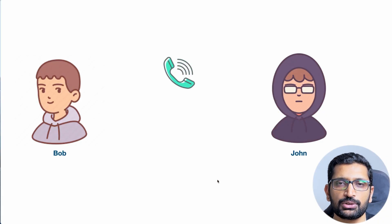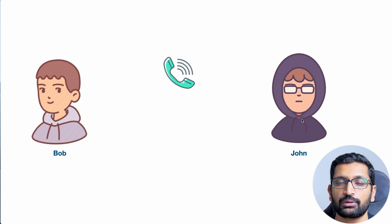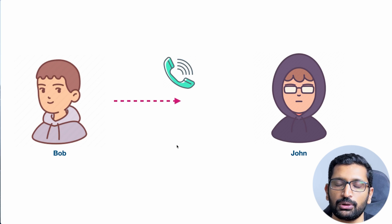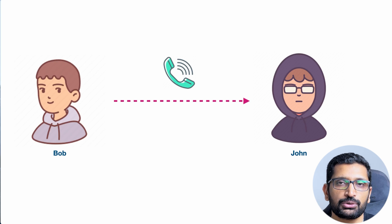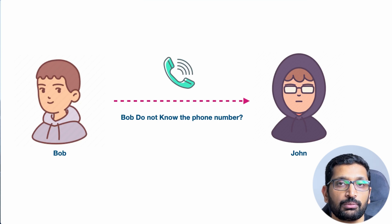Let's take a friend's analogy to understand the DNS system in a very simplistic way. I'm going to take two friends — on the left hand side you will see Bob, and on the right hand side you will see John. Bob has some evening plan for going out to a party, but he doesn't know how to call John because he doesn't have his phone number. So how can he make a call to John and make him aware about the evening plans? Let's figure out what are the viable options through which Bob can find the phone number of John.